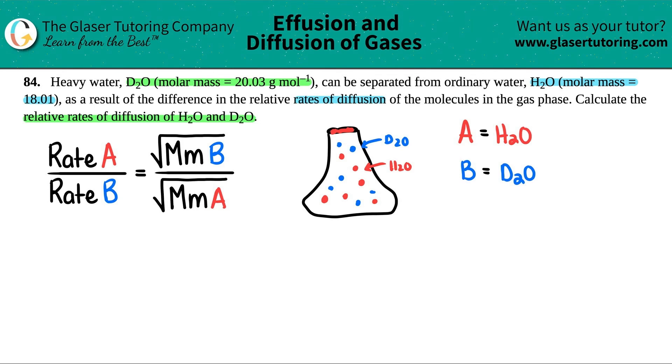Now, they did tell us the molar mass of each one. So we're going to have to put that into play. Now, all we have to do is just find out these relative rates of diffusion of H2O and D2O. So what I'm going to do is I'm just going to make it a little bit specific for ourselves. So we have to find out that rate of A, which is H2O,